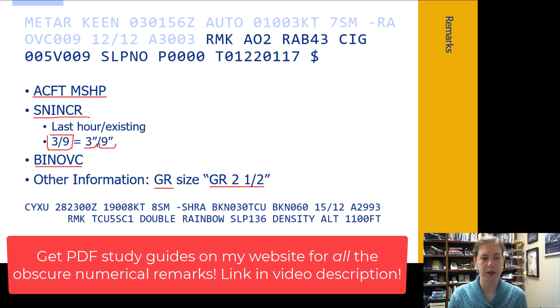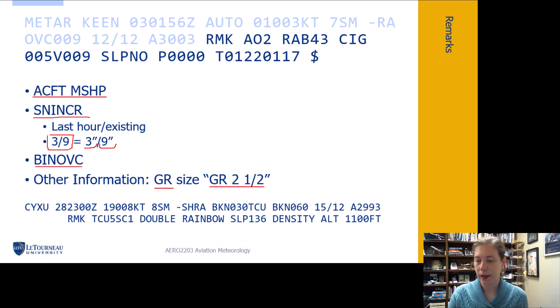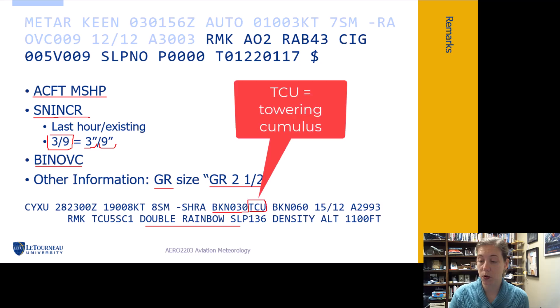And sometimes they just throw in other interesting remarks. So let's take a look at this one's from Canada, but that's fine. We have double rainbow. Interesting. We have broken clouds at 3000 and they're towering cumulus.